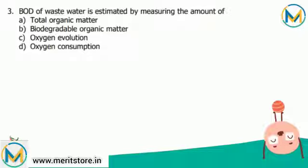Biochemical Oxygen Demand represents the amount of oxygen consumed by bacteria and other microorganisms while they decompose organic matter under aerobic (oxygen-present) conditions at a specified temperature. So the correct answer is option D, that is oxygen consumption.